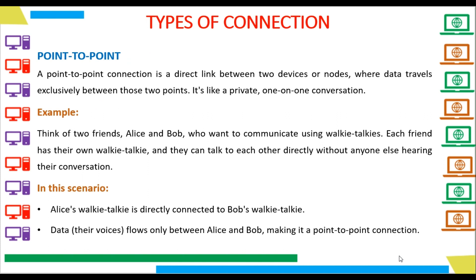First of all, we will see what is a Point-to-Point Connection. A Point-to-Point Connection is a direct link between two devices or nodes, where data travels exclusively between those two points. It's like a private, one-on-one conversation.